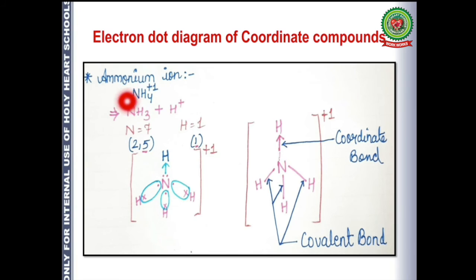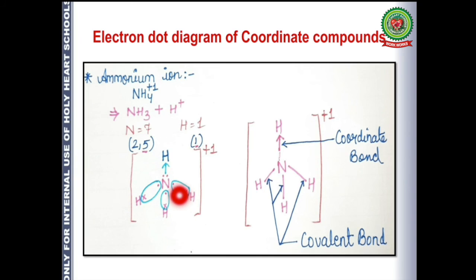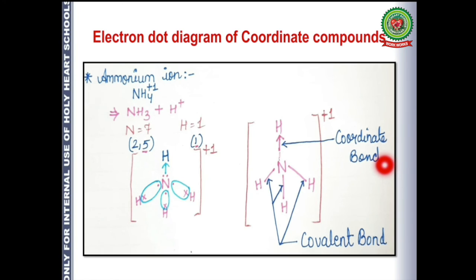The second example is of the ammonium ion. Ammonium ion is formed by the combination of ammonia with H⁺. To draw the ammonia structure, you need its electronic configuration: nitrogen has atomic number 7 and electronic configuration 2, 5 — so nitrogen has 5 electrons in its outermost shell. After sharing with hydrogen, two electrons are left as a lone pair, which nitrogen donates to the incoming proton (H⁺ without an electron), giving rise to coordinate bond formation.